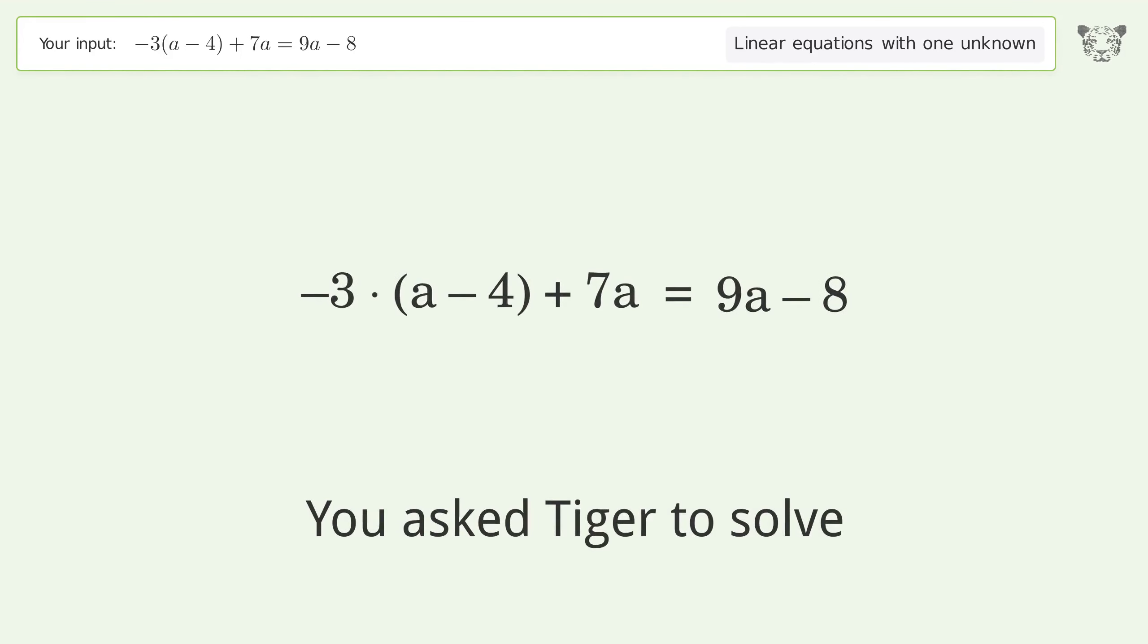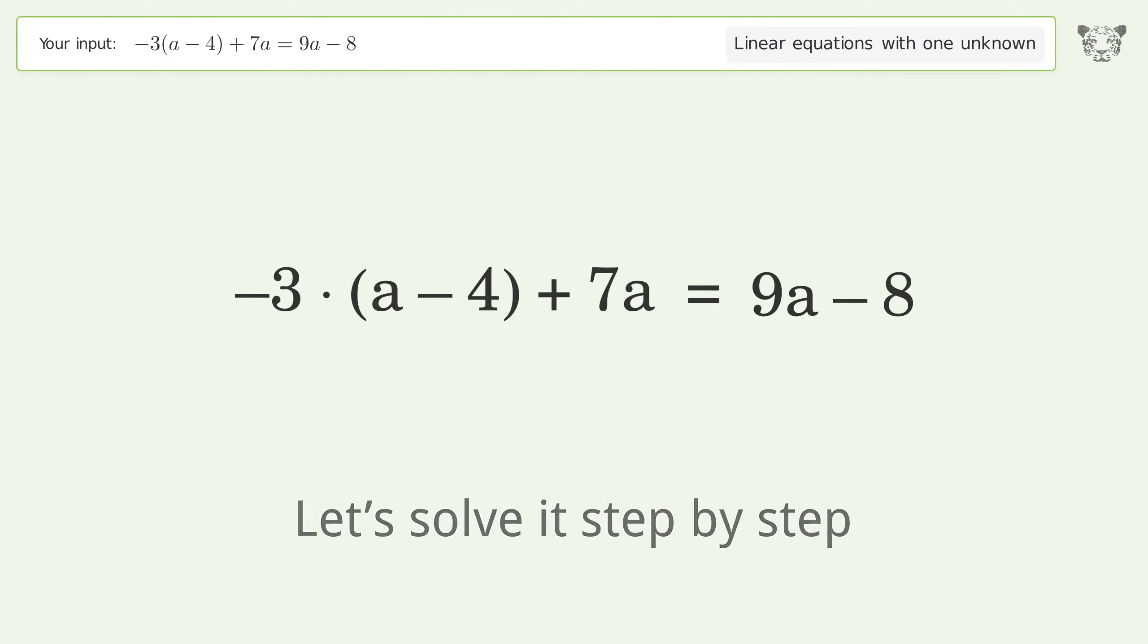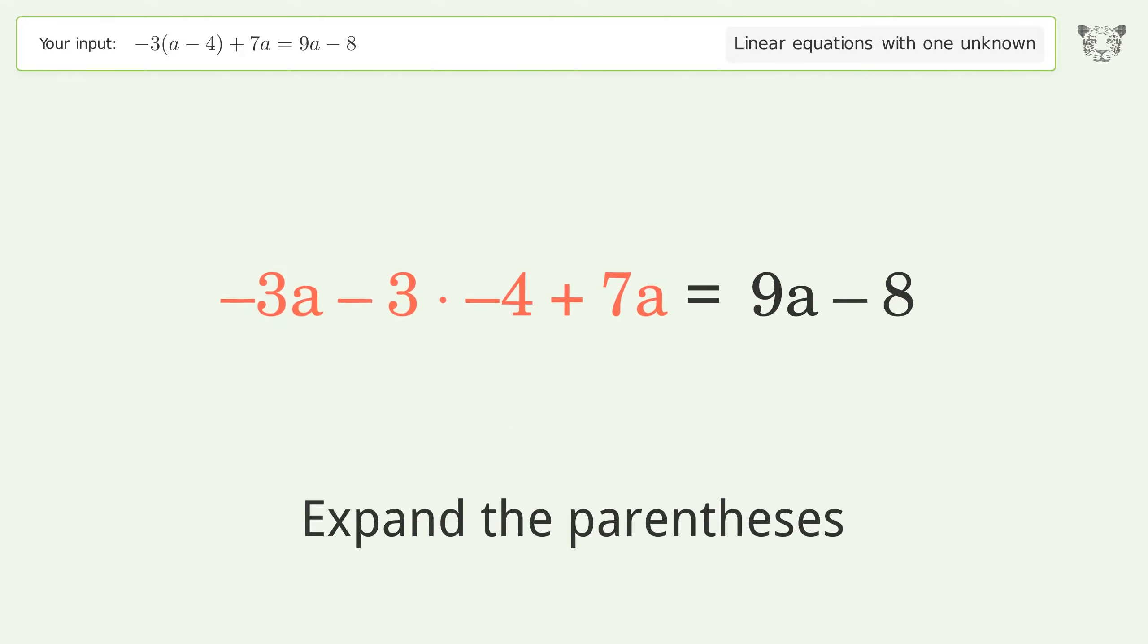You asked Tiger to solve this. This deals with linear equations with one unknown. The final result is a equals 4. Let's solve it step by step. Simplify the expression, expand the parentheses, simplify the arithmetic.